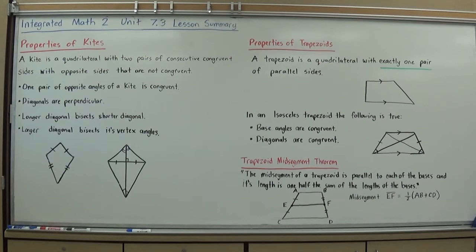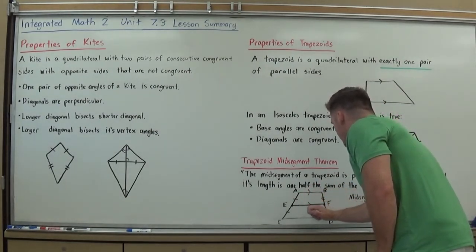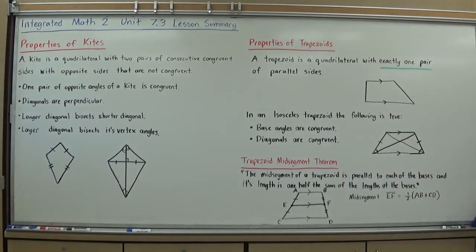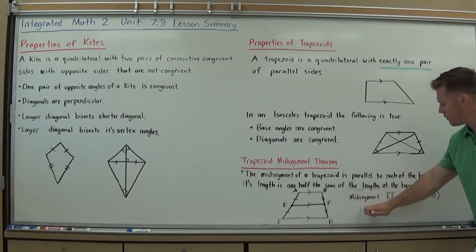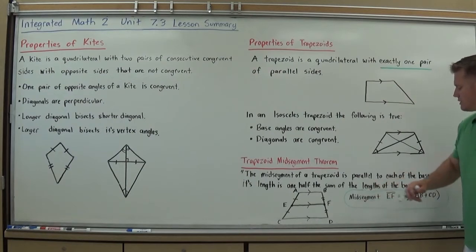So the mid-segment of a trapezoid is parallel to each of the bases, and its length is one-half the sum of the lengths of the bases. So this mid-segment will fall right in line with these other parallel bases, and length-wise it's going to be equal to one-half the sum of the other lengths. So I kind of wrote it in a more of a formula form for you here, and I would definitely write that one down. The mid-segment EF that I drew would equal one-half of AB plus CD.